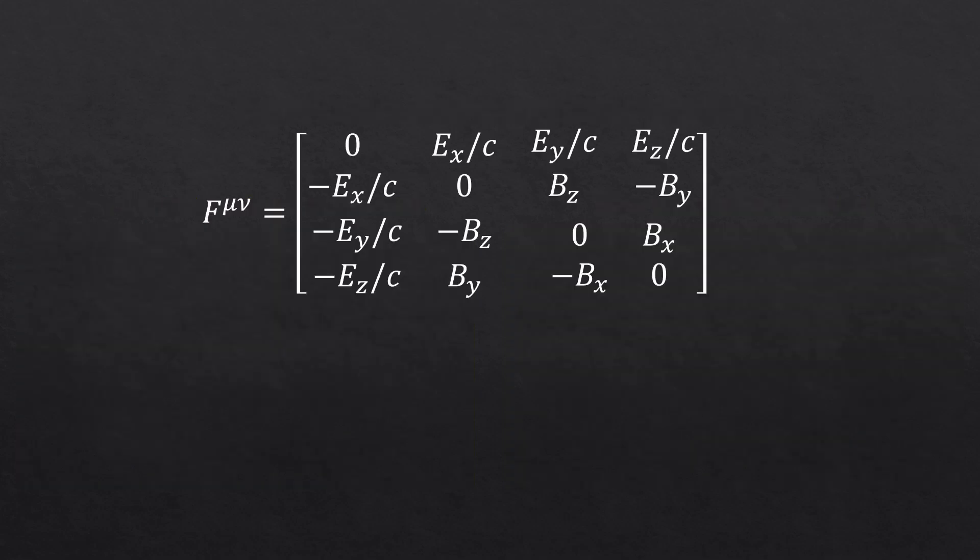You've seen how this electromagnetic field tensor transforms the four Maxwell's equations into just two equations, right? But where did this tensor come from?